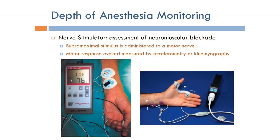A unique type of monitoring used in association with anesthesia machines is depth of anesthesia monitoring. This assesses the depth of anesthesia of the patient and makes sure that the patient is in a state of general anesthesia so that the operation can proceed without the patient still being awake.